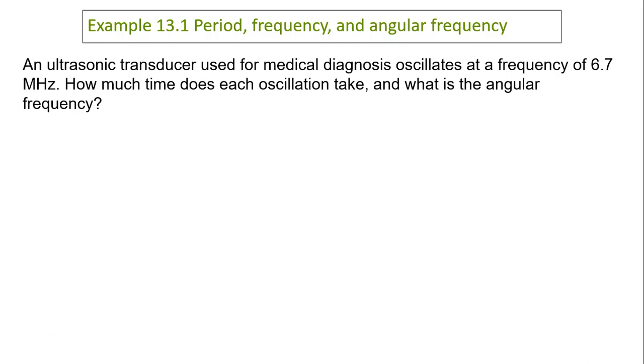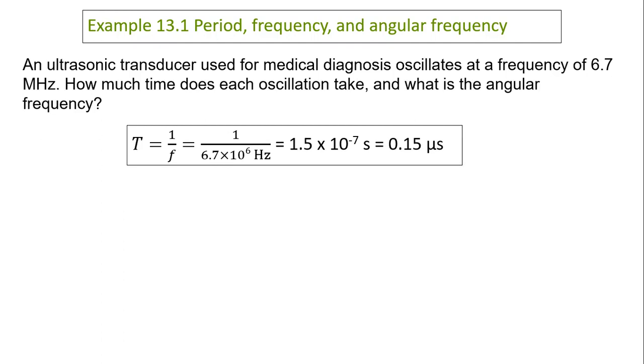How much time is the period? Period equals 1 over frequency. So that gives you 1.5 times 10 to the negative 7 seconds. Mega means 10 to the 6, and micro is 10 to the negative 6.